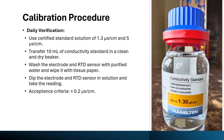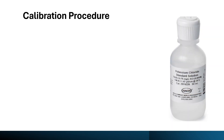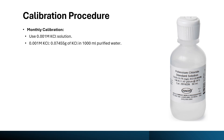This is how we perform daily verification prior to use of the conductivity meter. Now we will discuss the calibration procedure for monthly calibration. For monthly calibration we use 0.001 molar KCl solution, which is available commercially or can be prepared in the laboratory. For preparation of 0.001 M KCl, take 0.07455 grams of KCl and dissolve it in 1000 ml of purified water.